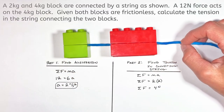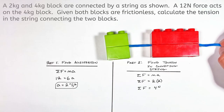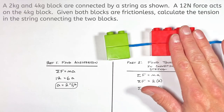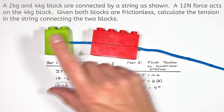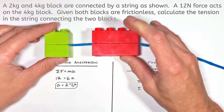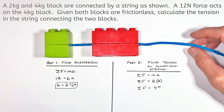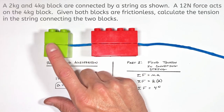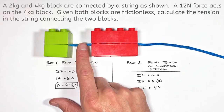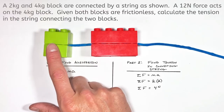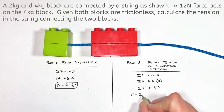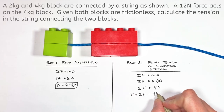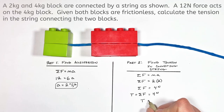What's happening is as I pull on this string, some of that force is being transferred into the red block. Some of it is passing through the red block and being transferred to the green block. That 12 Newton pull force isn't directly acting on the green block — it's only the tension in the string which is causing the green block to accelerate. Or to put it a different way, the tension in the string is the net force on the block, which means the tension in the string connecting these two blocks is 4 Newtons.